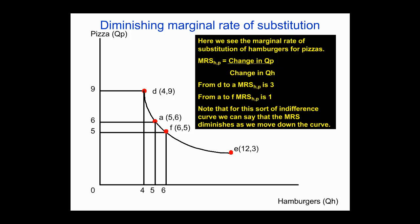So here we have a property of indifference curves — something we're assuming about individuals, and we think it's a realistic assumption. Remember, this is just our preferences that we're talking about here. We haven't brought any other variables in; we're just making some assumptions. Your preferences and my preferences are different, and we'll come back to how we might think about different preferences at another time.